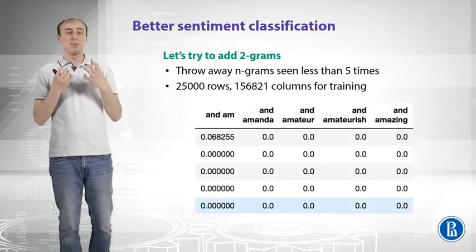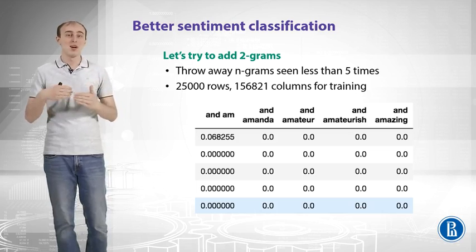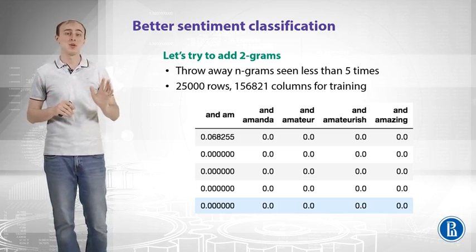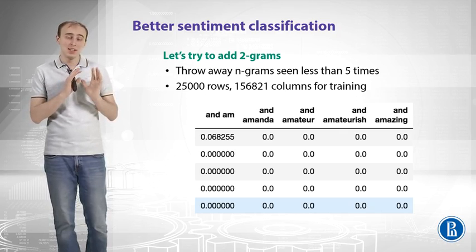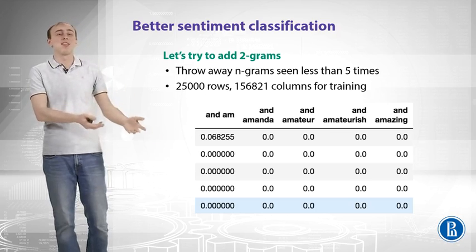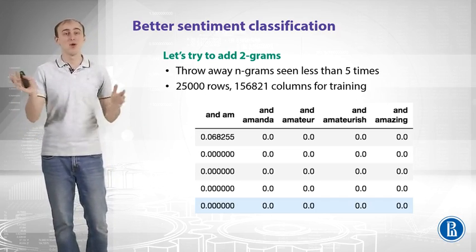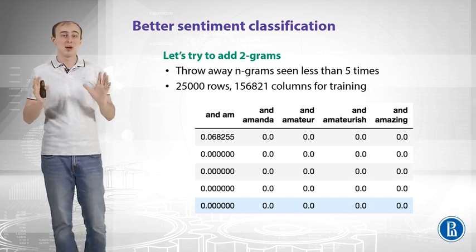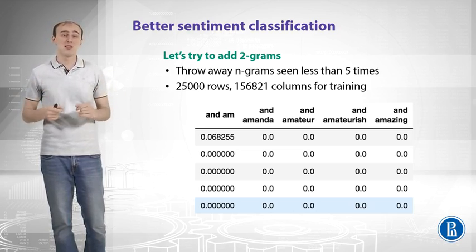Let's try to make this model a little bit better by introducing 2-grams. Before doing that, we should throw away n-grams that are not frequent — seen less than five times — because those n-grams are likely typos or uncommon expressions, and including them would likely cause overfitting. If we introduce 2-grams with that minimum-frequency thresholding, the feature matrix becomes 25,000 by 150,000 — a pretty huge matrix, but we can still use linear models and it just works.